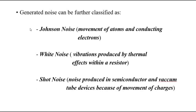Generated noise can be further classified into: first, Johnson noise, which is caused by the movement of atoms and conducting electrons in the conduction band; then white noise, which is produced because of thermal effects within a resistor, leading to vibratory movement of electrons; and then shot noise, which is produced in vacuum tube devices or semiconductor devices — especially where semiconductor-type sensors or p-n junction devices are used — due to the rapid movement of charges.